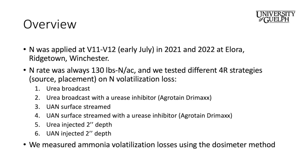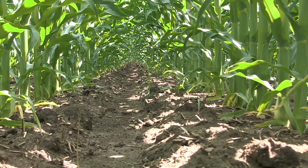The experiment compares UAN versus urea with six different 4R treatments at one rate. The treatments include surface-applied urea, surface-applied UAN (urea ammonium nitrate) with and without a urease inhibitor called Agrotain, plus injected urea and injected UAN about two inches below the soil surface. While injection isn't always realistic for in-season application, it was included to compare how effective a urease inhibitor is versus injection. The primary focus is measuring volatilization losses, which is the number one nitrogen loss pathway in Ontario — ahead of nitrous oxide or leaching.